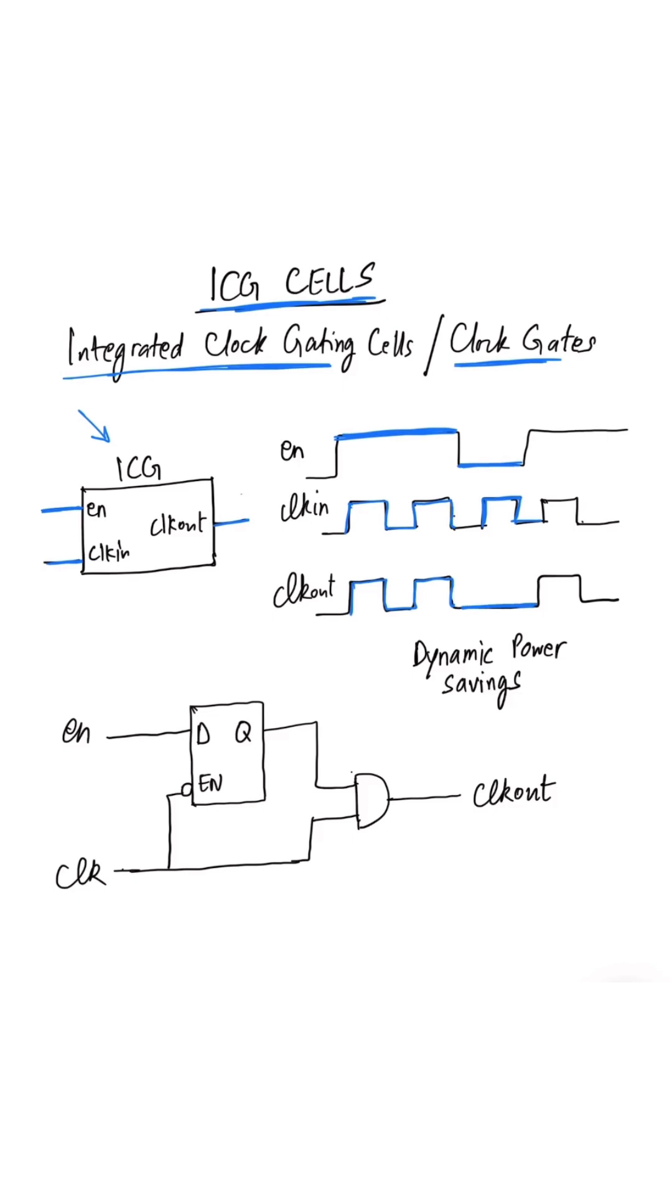So if there is some inactive logic in the design then a toggle in the clock is not needed and this will help us in saving dynamic power. Because dynamic power consumption comes directly from the toggling of the signal from 0 to 1 and 1 to 0.